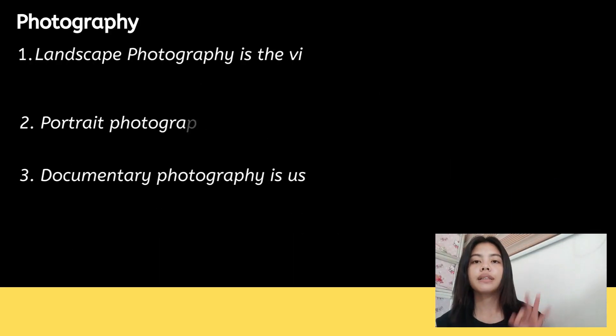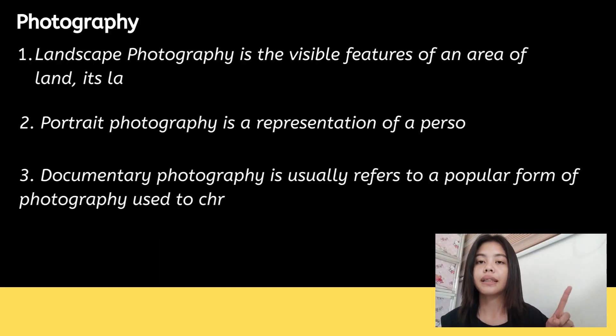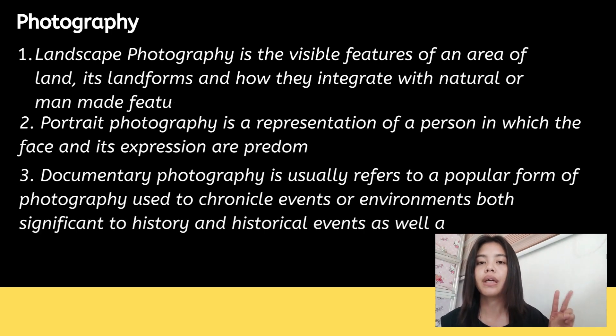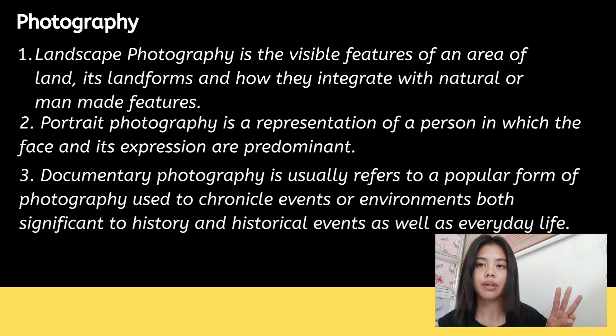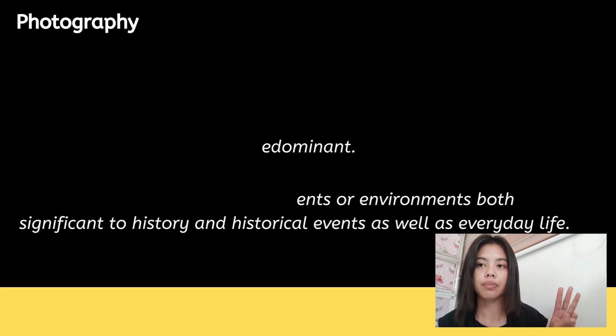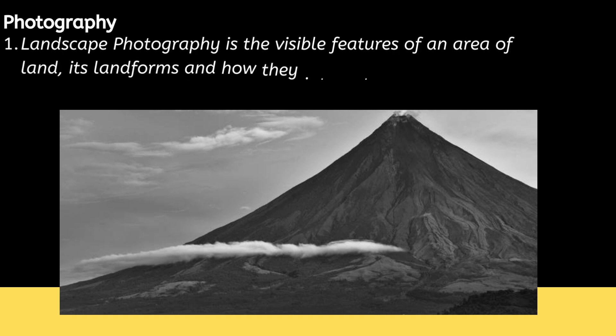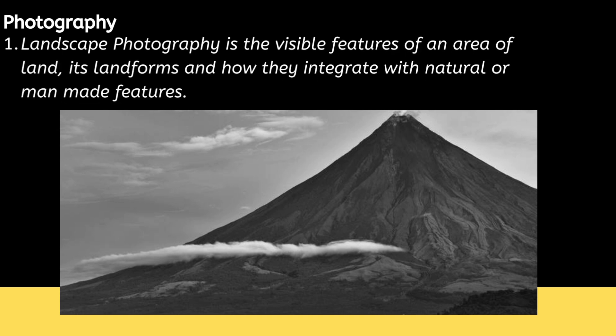Photography has three basic types: landscape photography, portrait photography, and documentary photography. Landscape refers to the visible features of an area — its landforms and how they integrate with natural or man-made features. An example of landscape photography is the Volcano Mayon of Alba and Pico, Philippines.